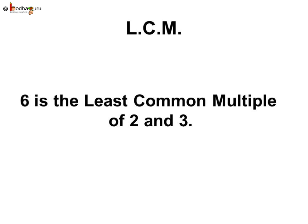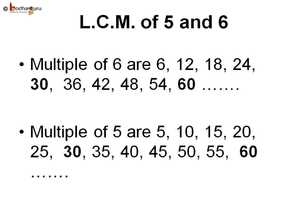You know, the smallest common multiple of 2 or more numbers is called the lowest common multiple. So, we can say 6 is the least common multiple of 2 and 3. That is, 6 is the LCM of 2 and 3.